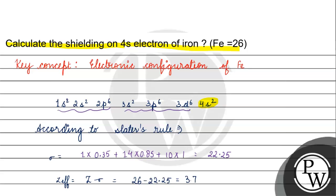We have the same shielding effect for the electrons present in the 4s orbital of iron. The effective nuclear charge experienced is 3.75. Thank you and all the best.